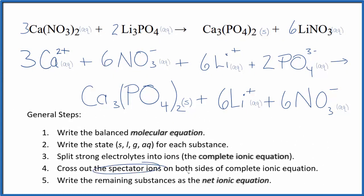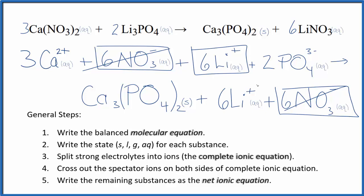Now we can cross out spectator ions. They're on both sides of the complete ionic equation. So we have our reactants on the top, products on the bottom. In the reactants I can see there are 6 nitrate ions here, and then again we have them in the products. So these are spectator ions. We cross these out. 6 lithium ions in the reactants, then in the products, 6 lithium ions. Cross them out.